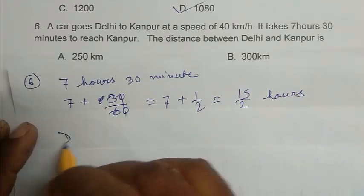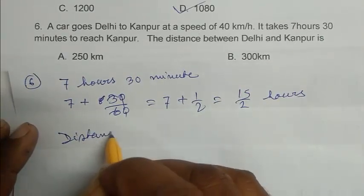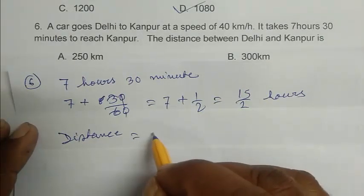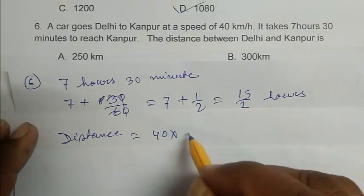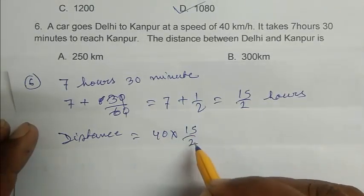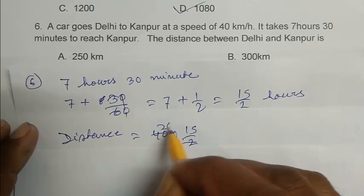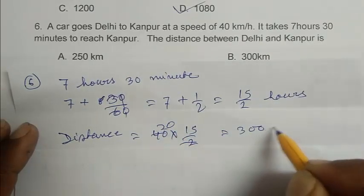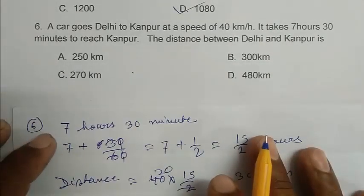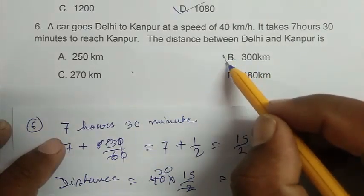We have to convert minutes into hour. So it is going to be 30 by 60, that is 7 plus 1 by 2, that is 15 by 2 hour. So distance equal to speed that is 40 into time 15 by 2. It is going to be 300 kilometer. So B is the right answer.